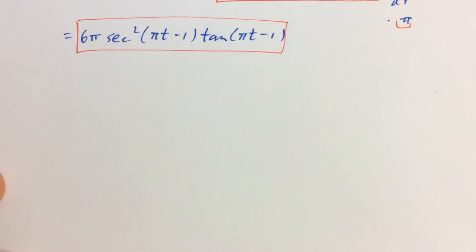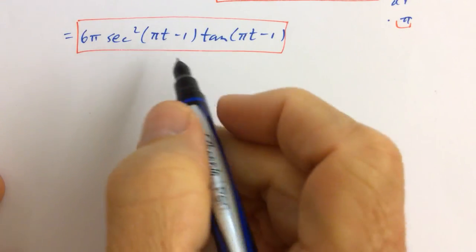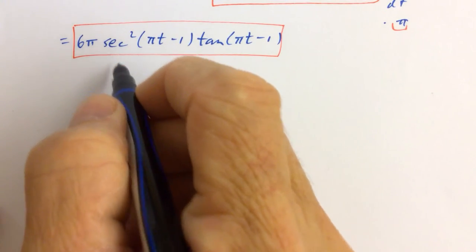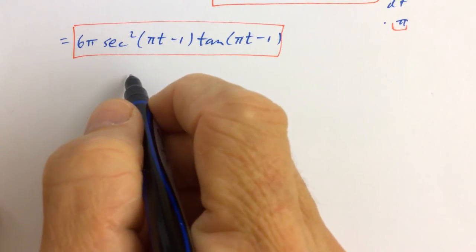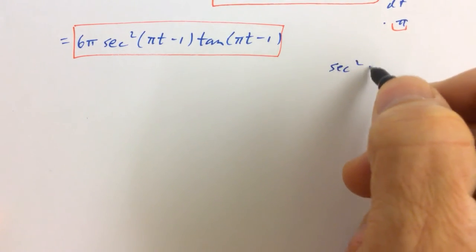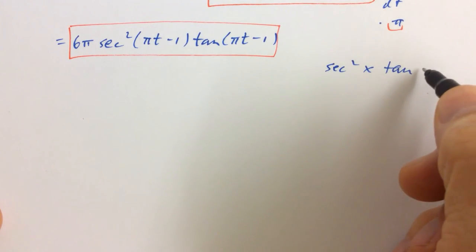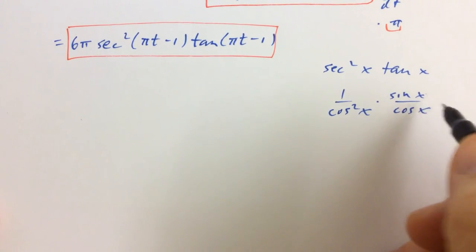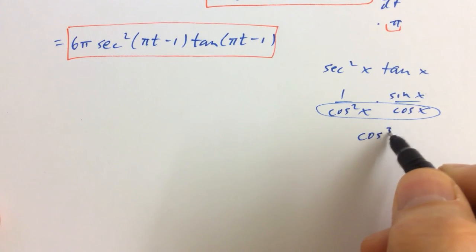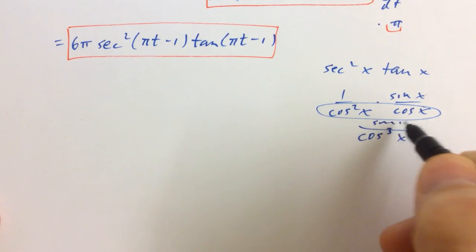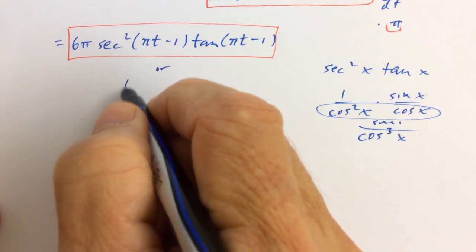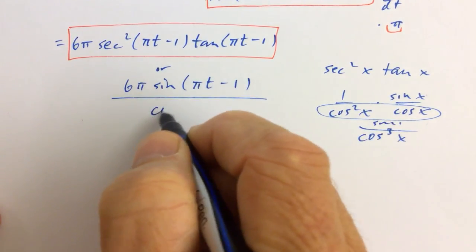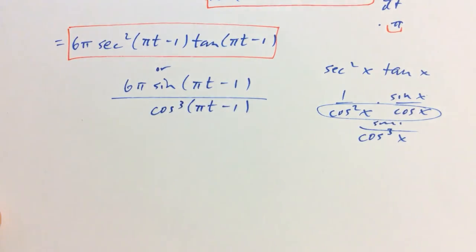I just checked the back of the book to make sure the form I left it in was the same, and it's not — but that doesn't mean this is wrong. If it were a multiple choice test, we know secant squared is 1 over cosine squared, so secant squared of x times tangent of x equals sin(x) over cos³(x). The answer in the back of the book was 6π times sine of (πt − 1) over cosine cubed of (πt − 1) — same answer, just different form.